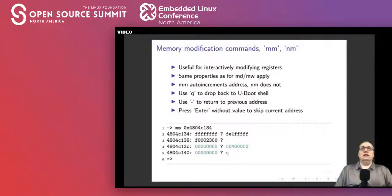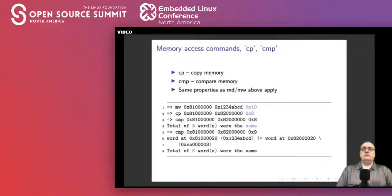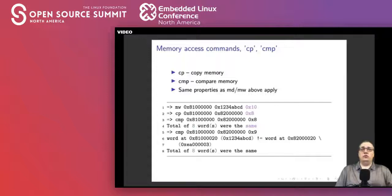Memory modification commands allow more interactive ways of dealing with memory. The mm command is nice because it auto-increments the element as it goes through memory. Starting at a particular address, you can enter values and press enter to advance to the next offset; press q to stop, minus to go back, or enter to skip a line without making a change. You can also copy memory with mc, and compare two different areas with cmp to see what's the same and what's different.